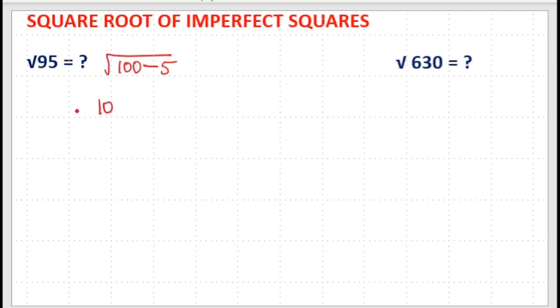So root 100 is 10, then 10 minus 5 divided by double of 10 is 20. That is 10 minus 5 by 20 is 1 by 4.